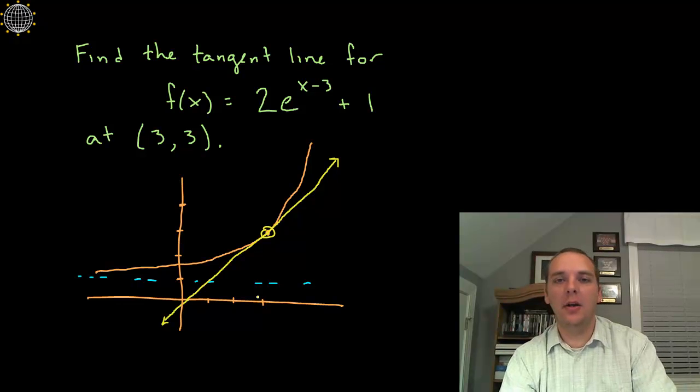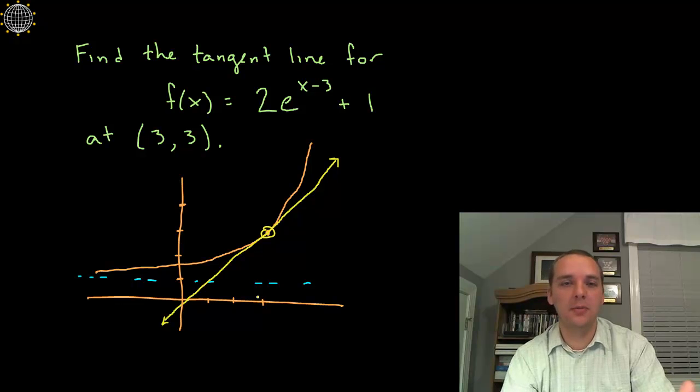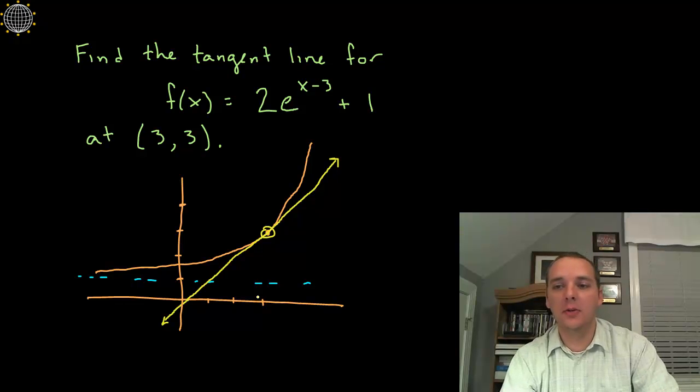So this is a very common calc one problem where they ask you to find the equation of a tangent line to an exponential function because it requires you doing two things. One new thing is finding the derivative of this exponential function but just so they're not boring plug and chug problems just taking derivative after derivative they'll also combine this problem with something you did a long time ago in finding tangent lines. So you actually have to do two things here.